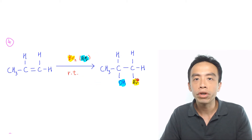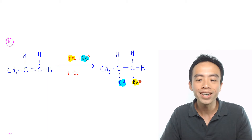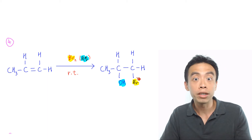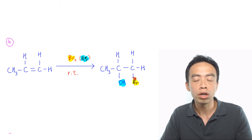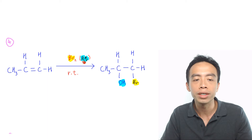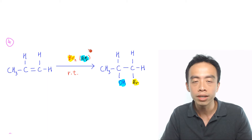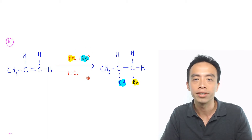The fourth must-know reaction for alkene is the electrophilic addition to add a Br and OH group. This is done using aqueous bromine at room temperature.